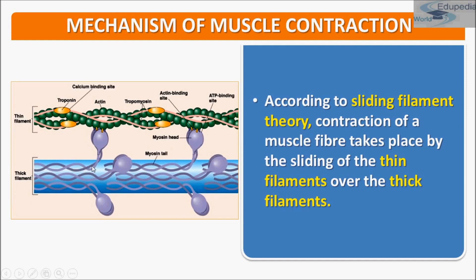This is the LMM component — light meromyosin of myosin — and this is the HMM component: the head and the short arm. The HMM component of myosin goes and attaches to the actin protein. This is the structure of actin, where troponin is shown and the pink filament is tropomyosin. These are the actin binding sites where myosin attaches. Troponin is made up of three subunits.